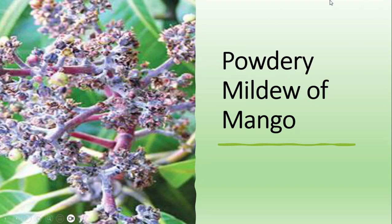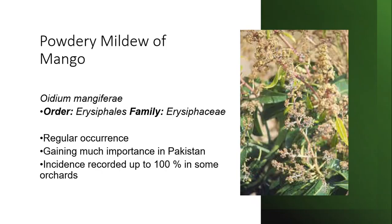This is a very important disease of mango — where the mango grows and where the disease comes from. The causal organism is Oidium mangiferae, order Erysiphales, family Erysiphaceae. This is a very regular occurrence and is very common in Pakistan, where up to 100% incidence has been recorded in orchards.